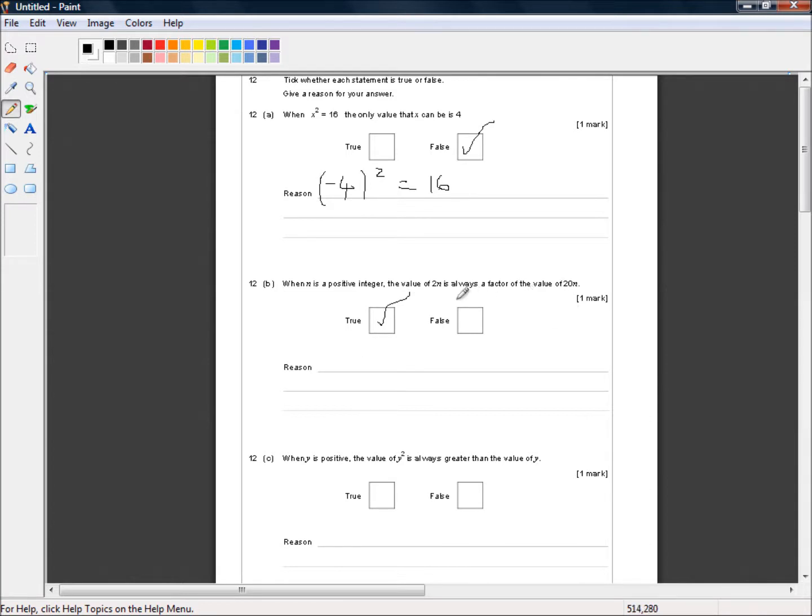If we factor out the 2n, 2n which is a factor and then that leaves us with 10. So 2n times 10 equals 20n. So it's obvious because 2n is a factor of 20n.